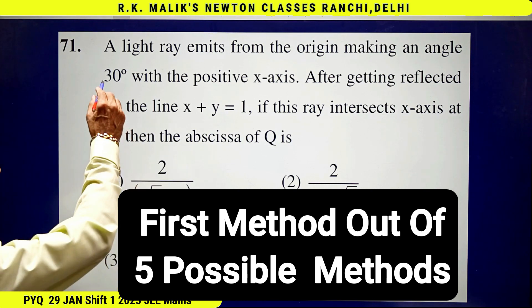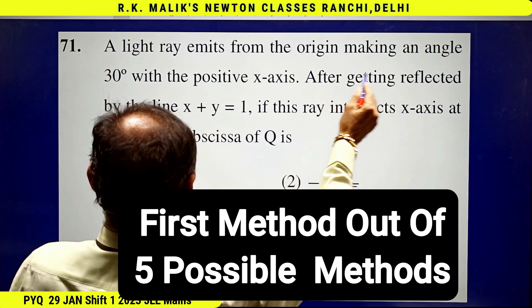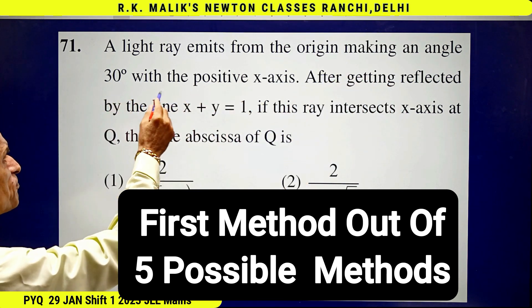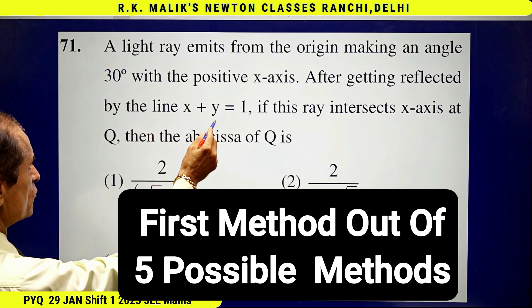In this question, it is given that a light ray emits from the origin making an angle 30 degrees with the positive x-axis, after getting reflected by the line x + y = 1.